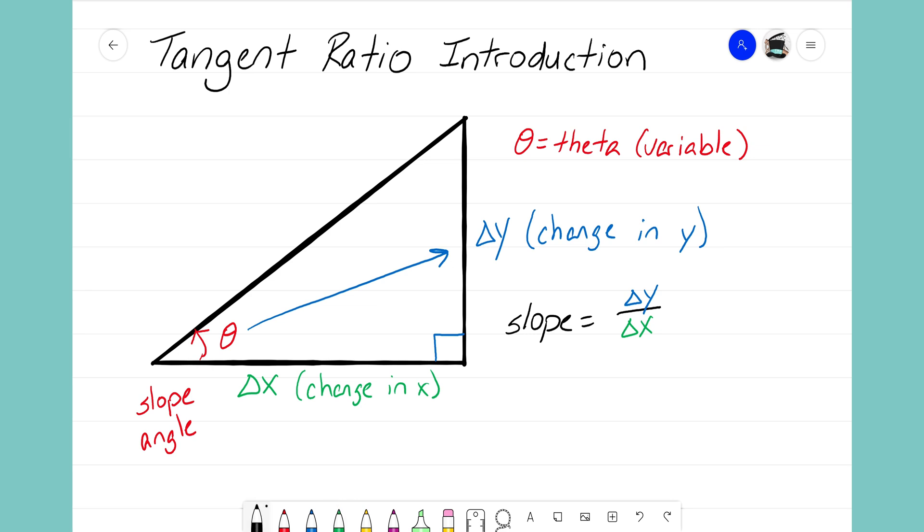This is how we explain that when we're writing it in a mathematical sentence. We would say that the tangent of theta—remember theta is referring to an angle that could be 20 degrees, 30 degrees, 40 degrees—but what we're understanding is that the tangent of theta is going to equal this slope ratio. And that is what the tangent ratio is: it's understanding that the angle in our slope triangle is determining that slope.